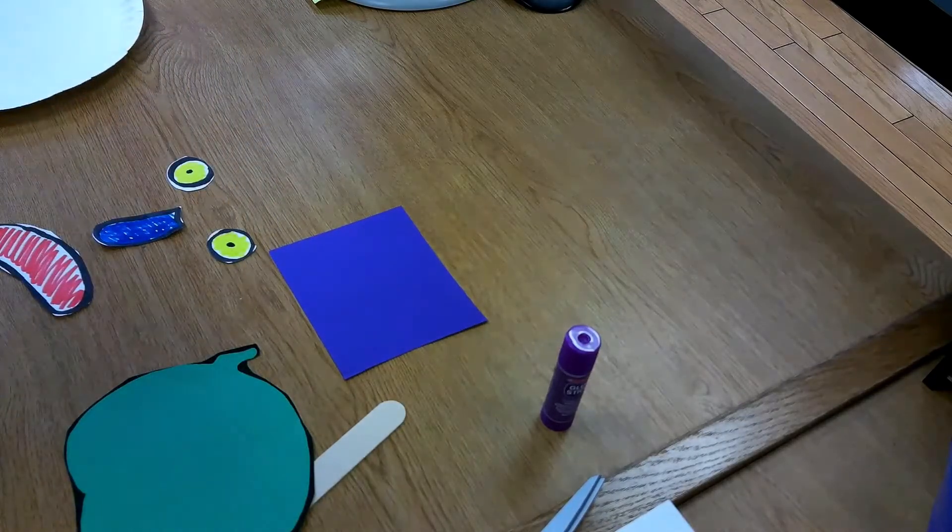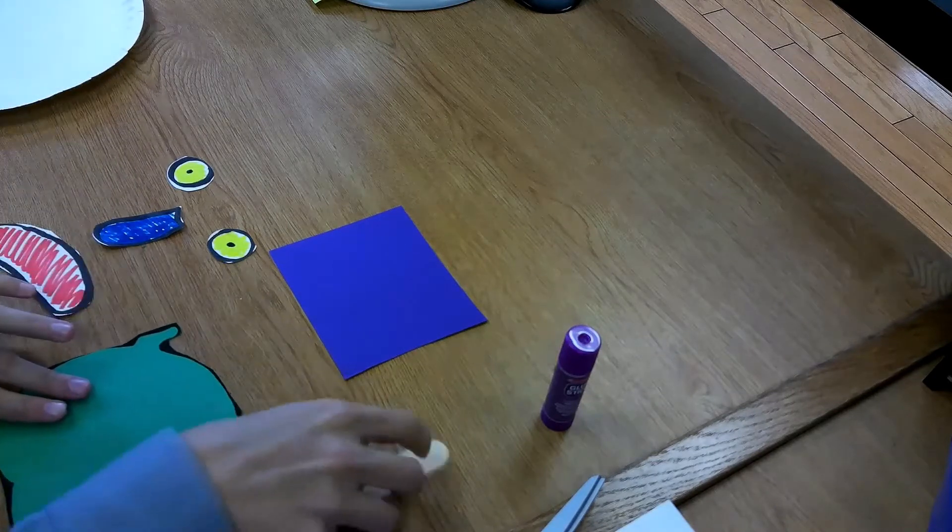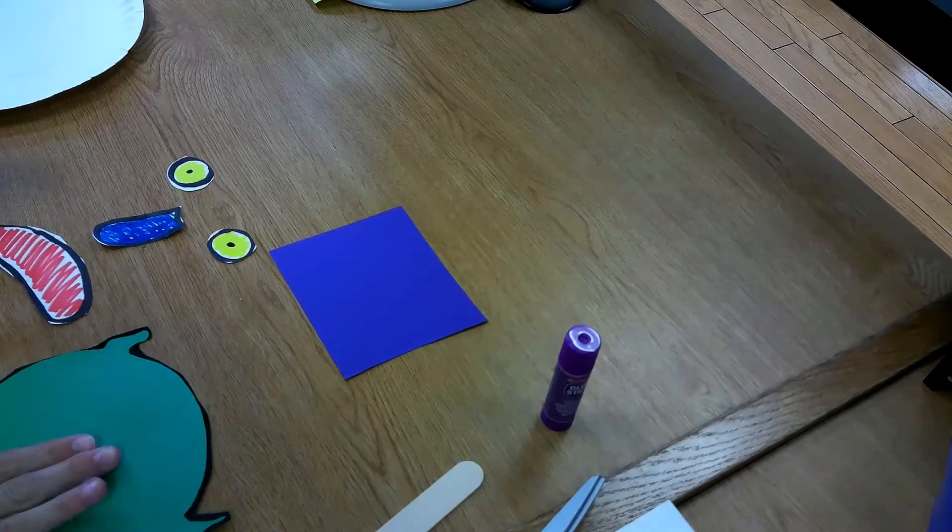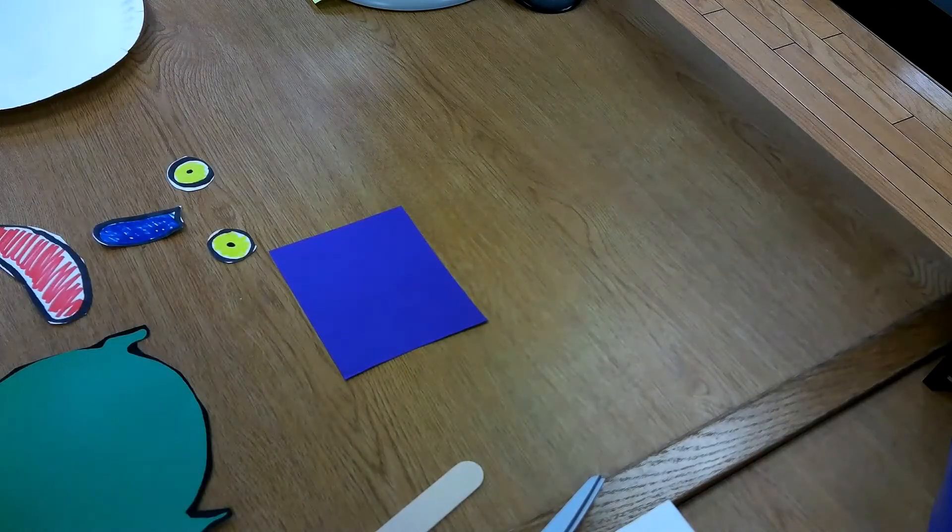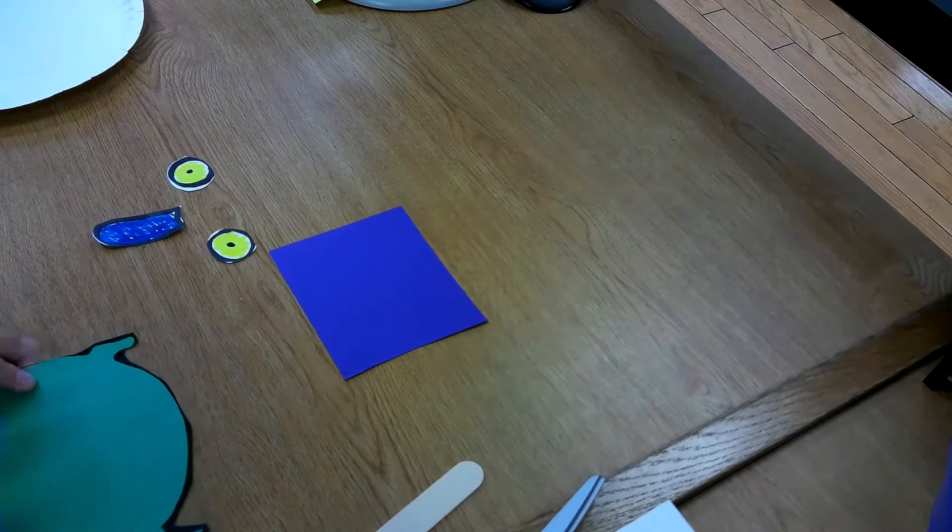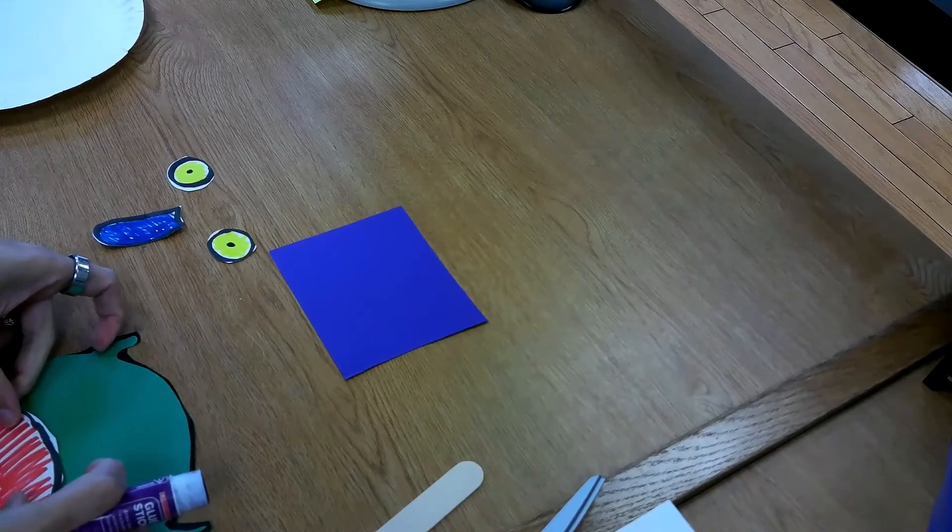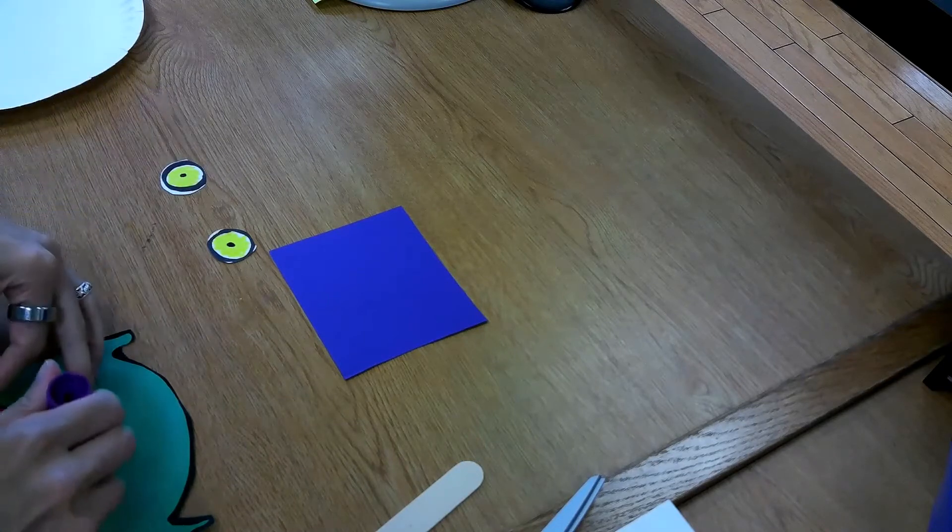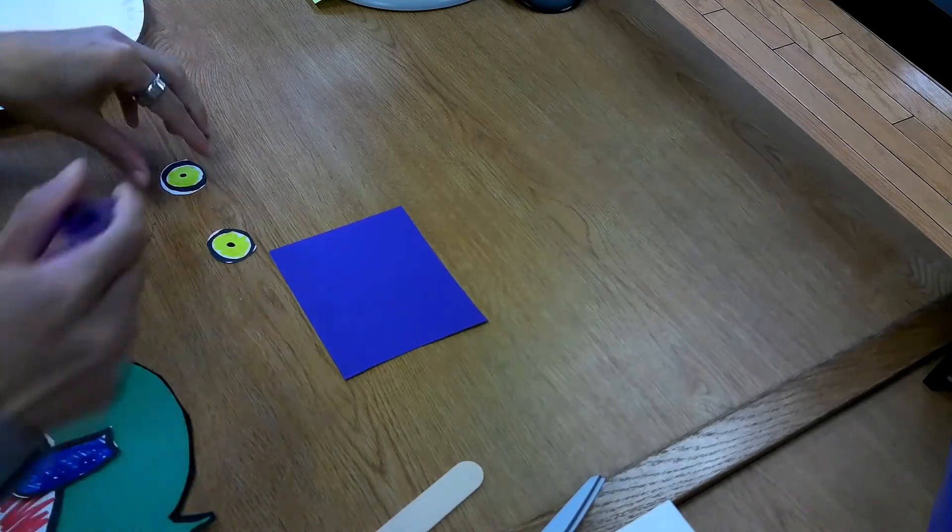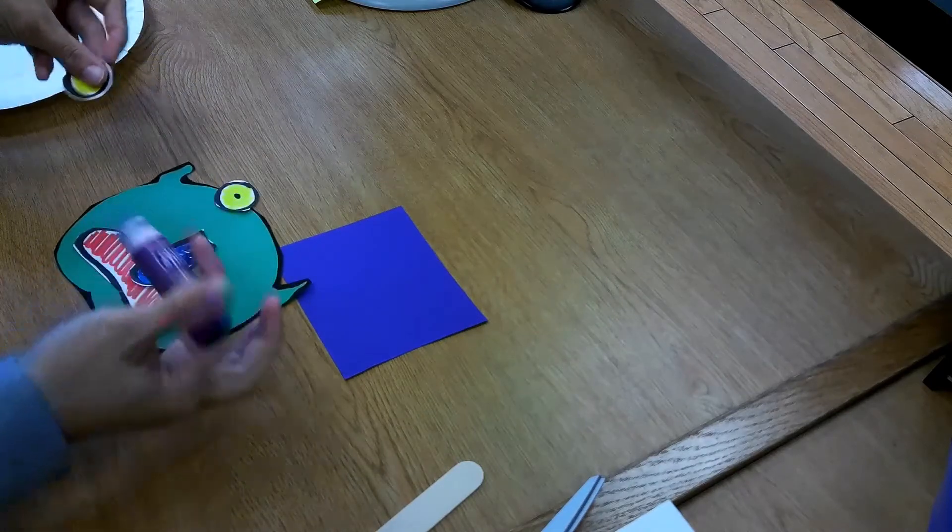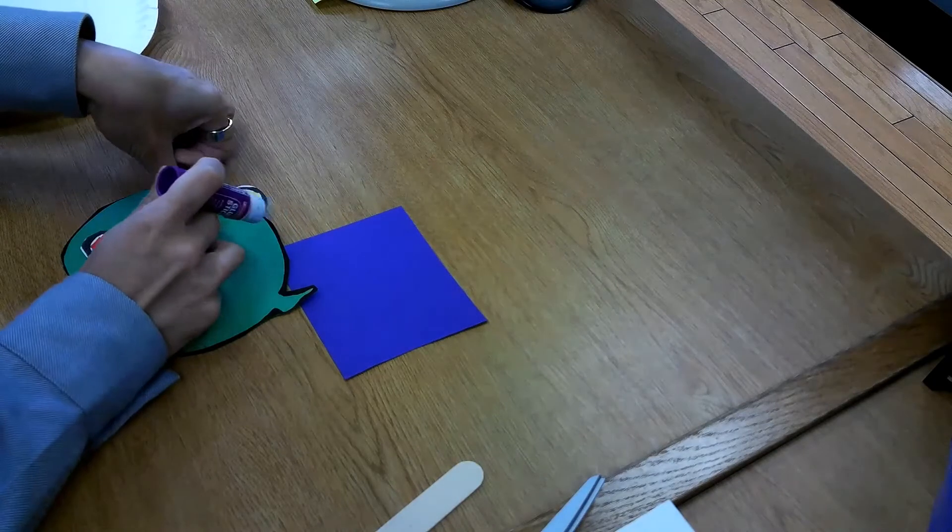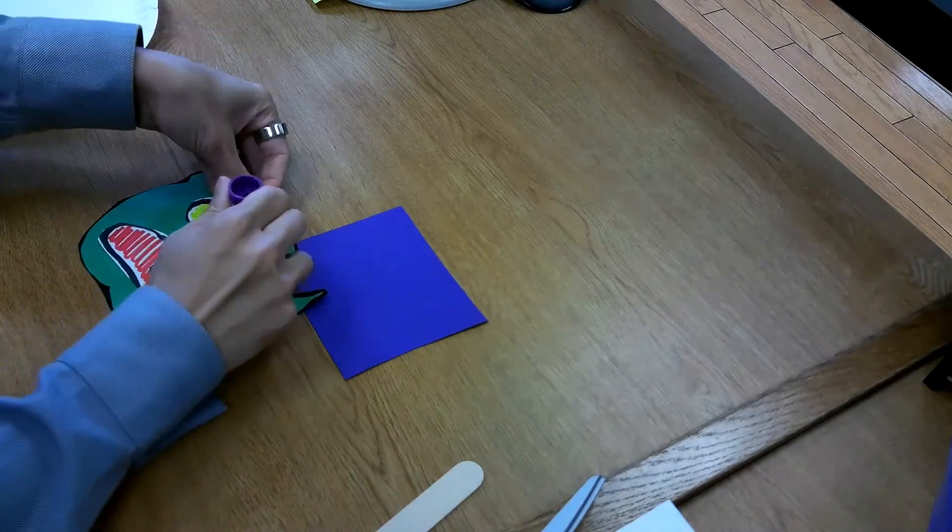We've got a face starting up. So now we can glue these facial features on our monster's face. There's his mouth. You can turn it upside down if you want him to have a smiley face. There's his big blue nose. One eyeball. Other eyeball.